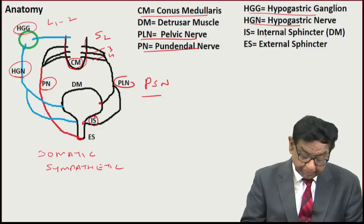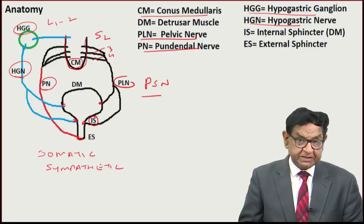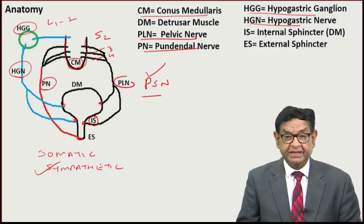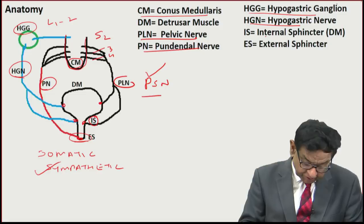The hypogastric nerve also supplies the detrusor and internal sphincter. An important anatomical point: the detrusor and internal sphincter are supplied by the autonomic nervous system — both parasympathetic and sympathetic — while the external sphincter is supplied only by the somatic nerve, that is the pudendal nerve. This is the basic anatomy.